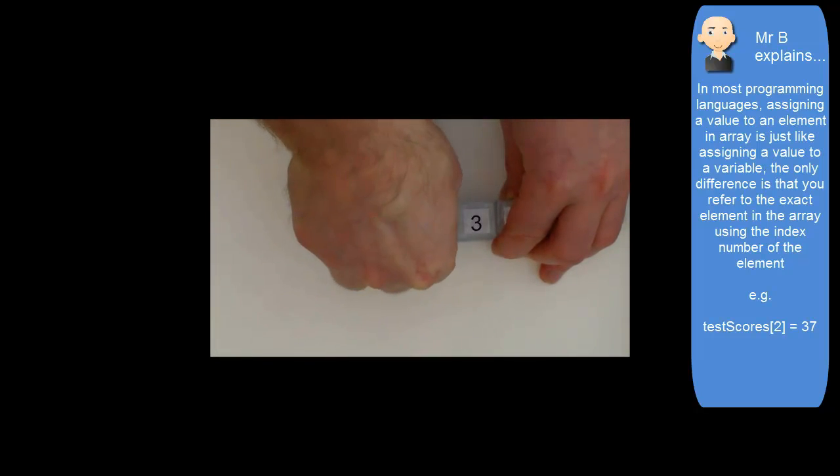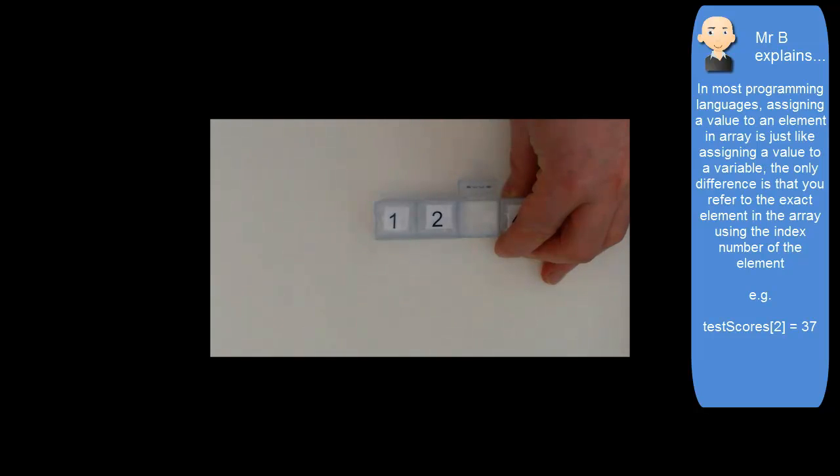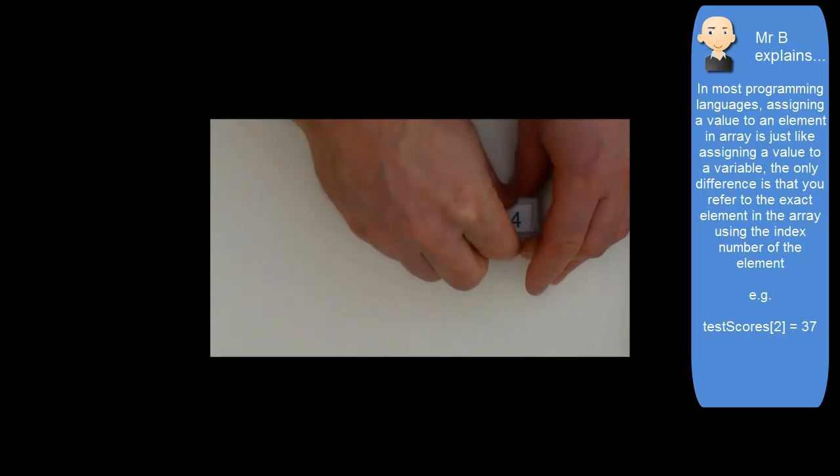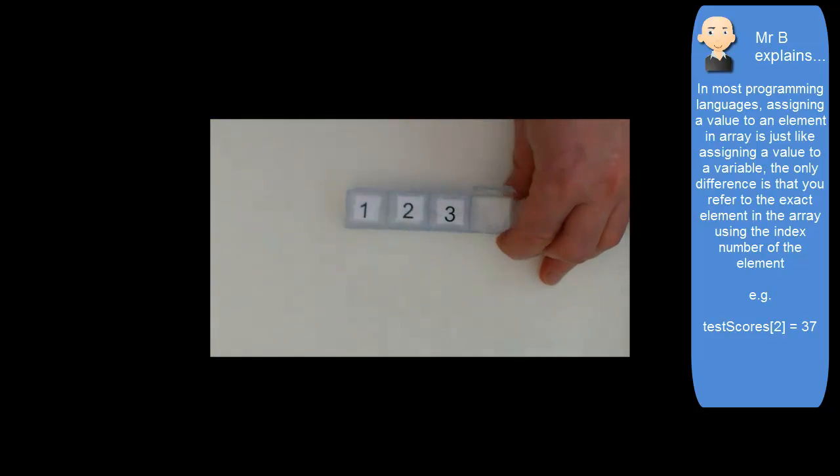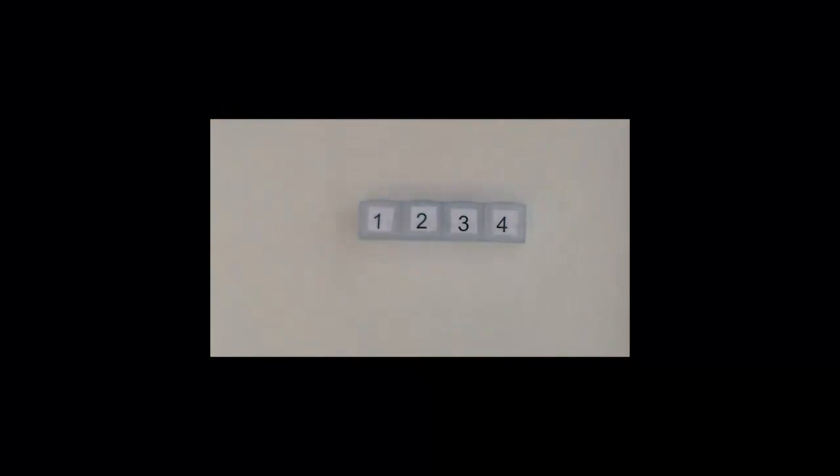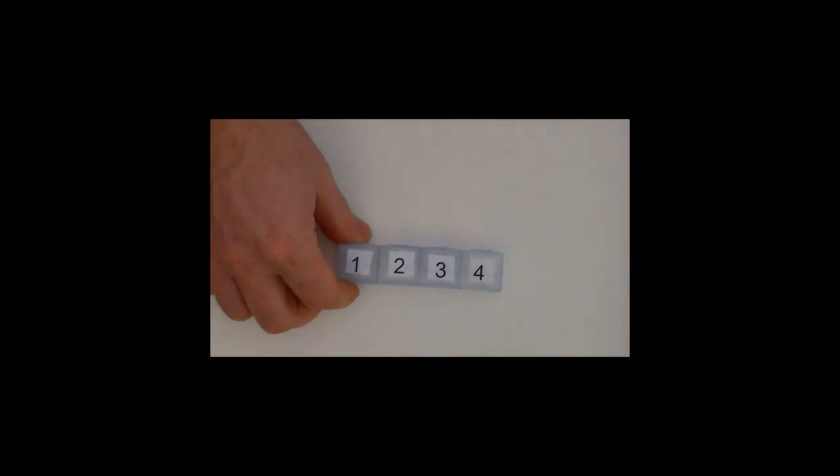And testScores[3], placing the value 50 inside, and testScores[4] with the value 43. Each time in square brackets I'm using the index value or index number for that particular element of the array.